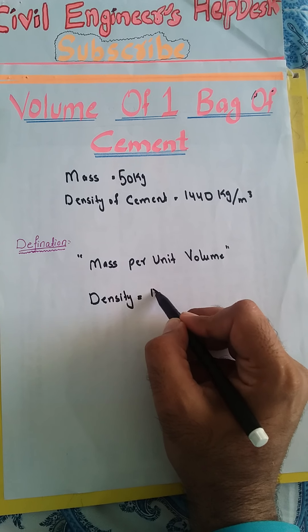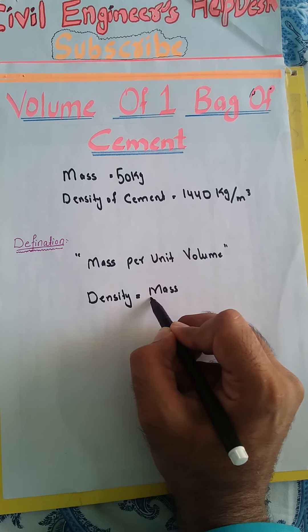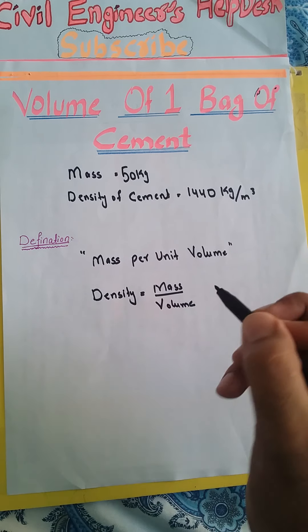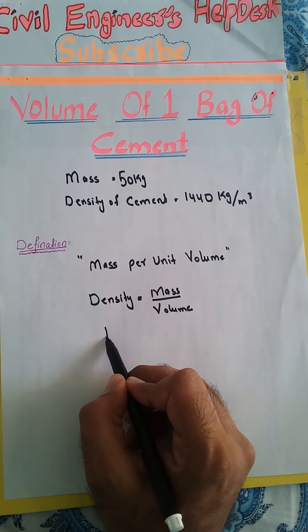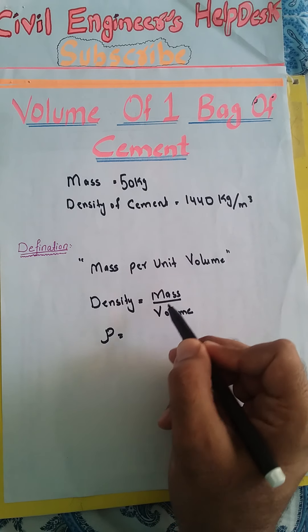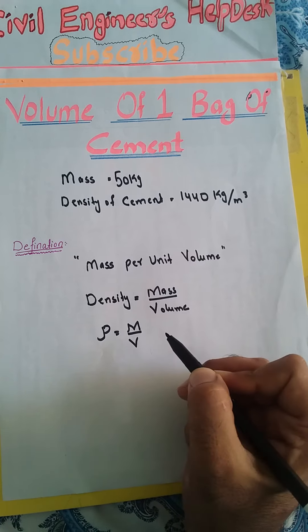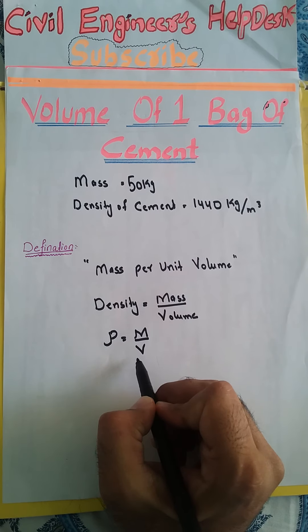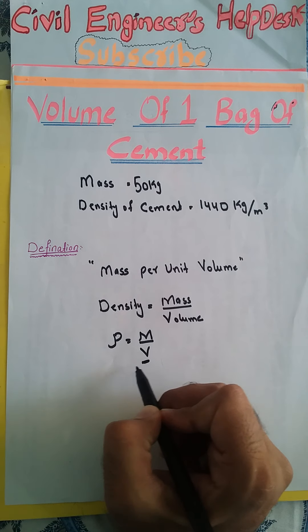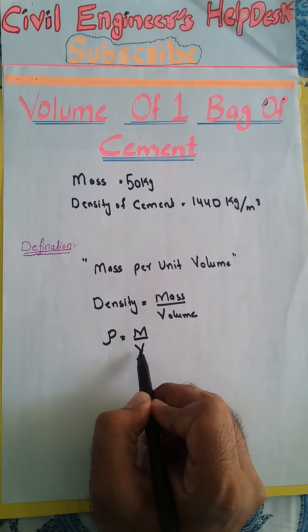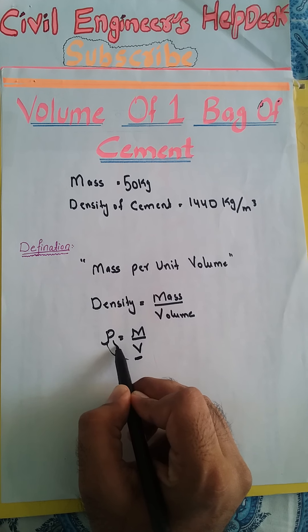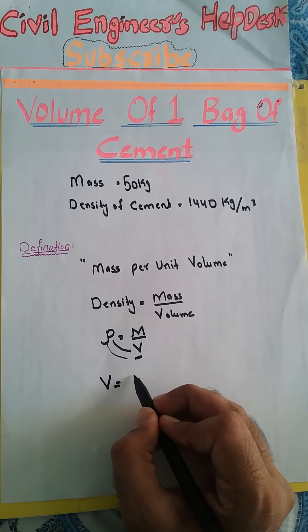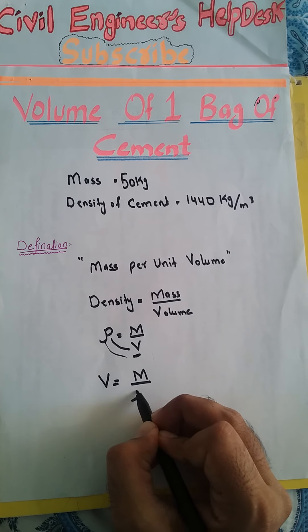Please remember this definition. According to the definition, density (ρ) is equal to mass (m) per unit volume (V). Since we are calculating volume, we derive this formula: V will go to one side and ρ to the other, so after derivation, volume is equal to mass divided by density.